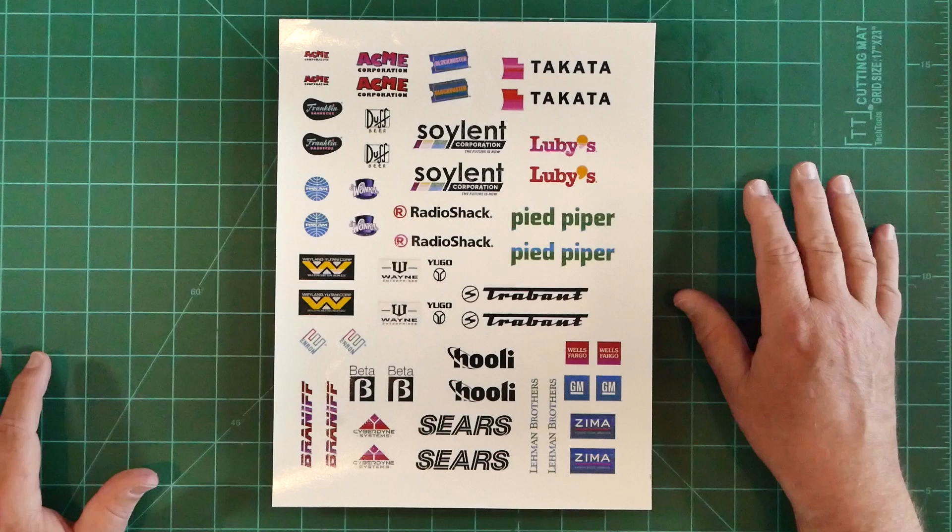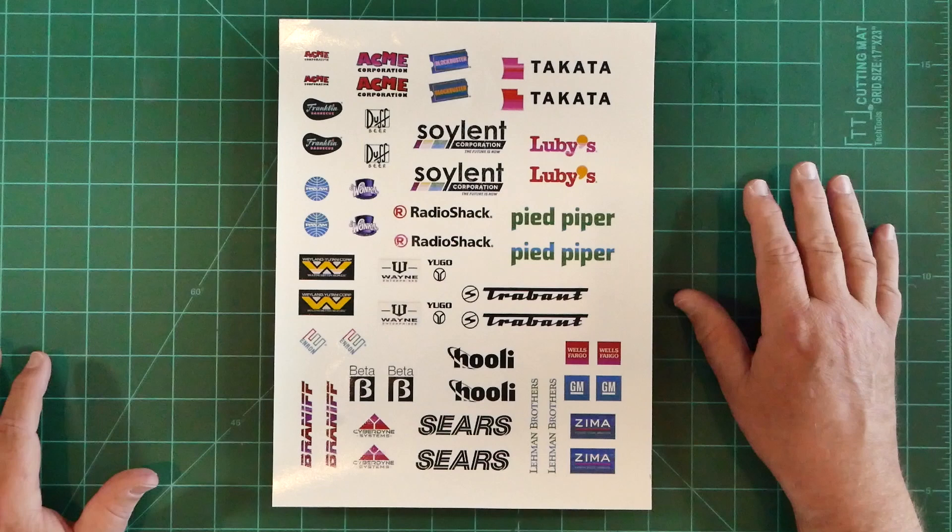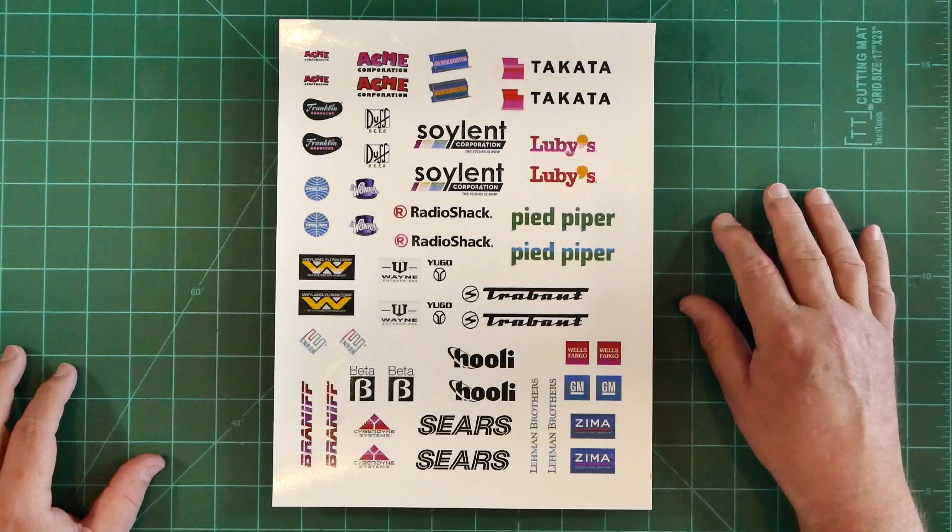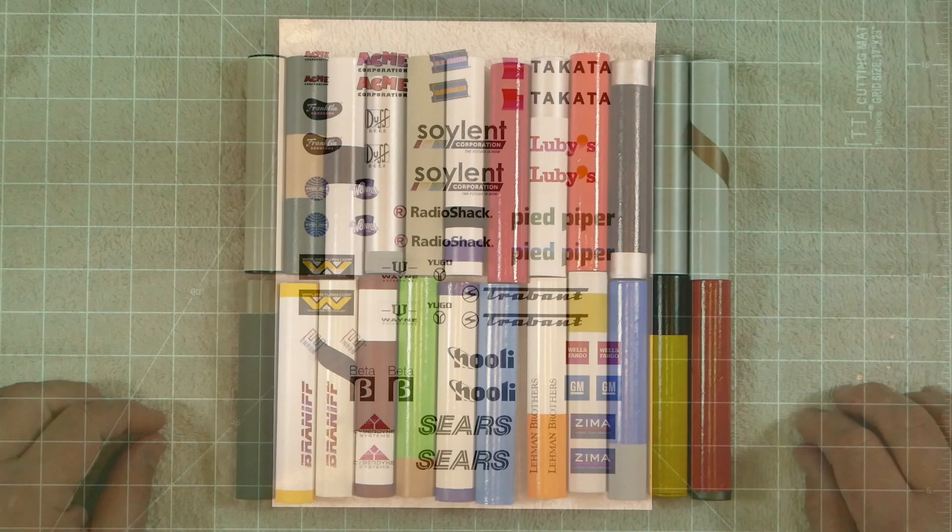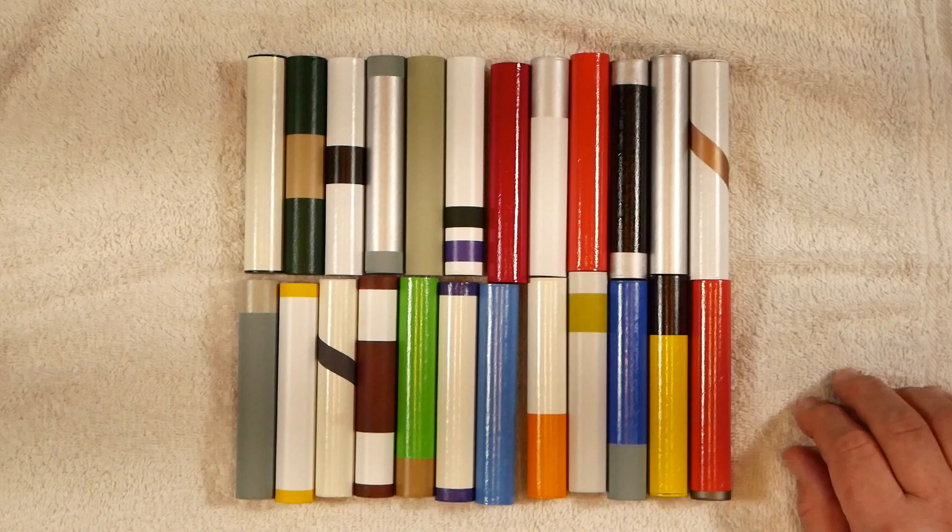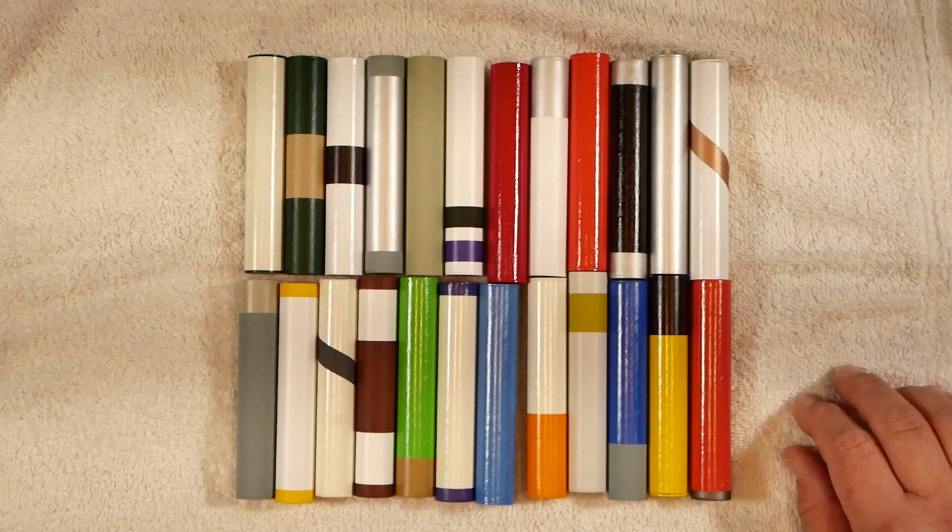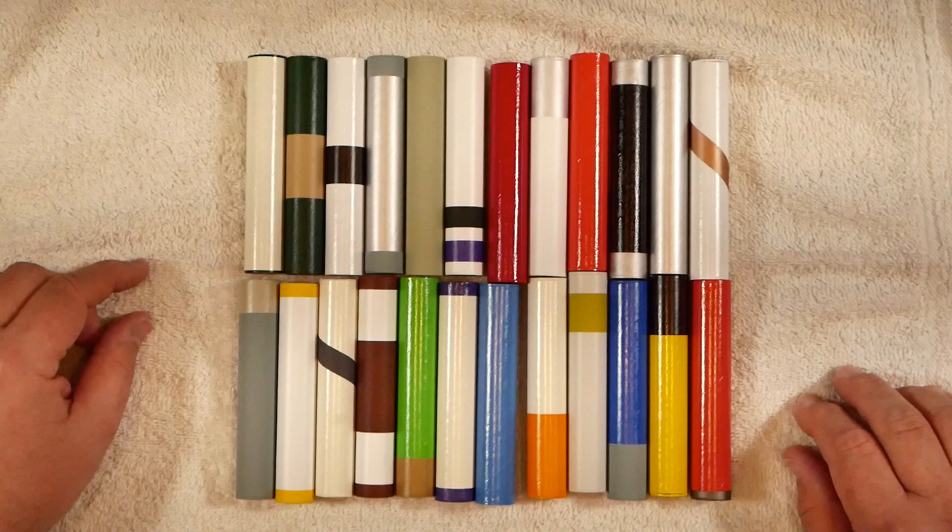We've completed painting the 24 individual cargo containers using a unique color scheme for each of them. Essentially, I raided just about every spray lacquer can that I had on the shelf for the base colors. I then used my collection of acrylics to airbrush the contrasting detail colors that you see here. Our next task will be to apply the corporate logo decals to each of these.